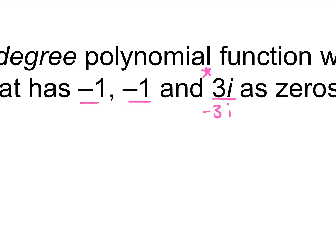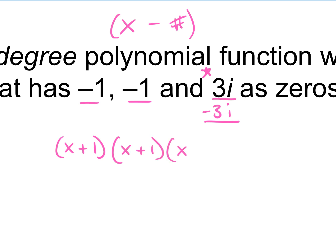So here we have four zeros: negative 1, negative 1, 3i, and negative 3i. When we put it into factored form, it's always x minus the number. So x minus negative 1 would be x plus 1. We have another negative 1, so another x plus 1, and x minus 3i, and x minus negative 3i which would be x plus 3i. So we write it out in factored form first.